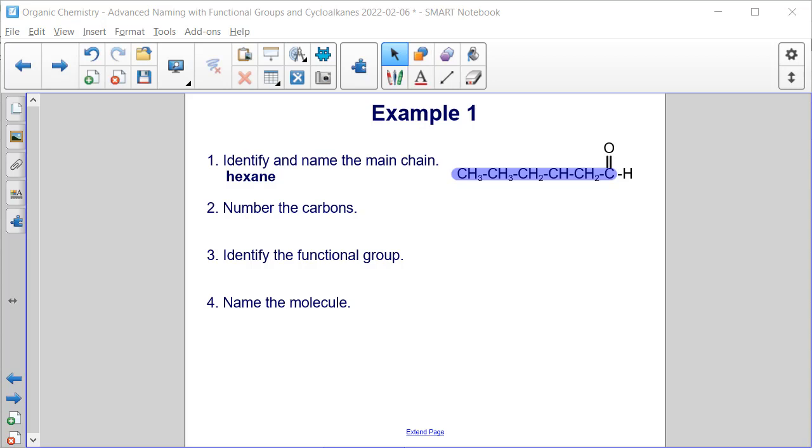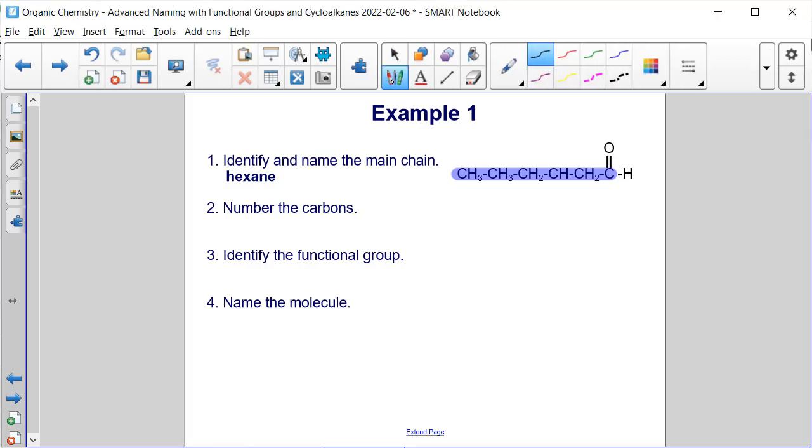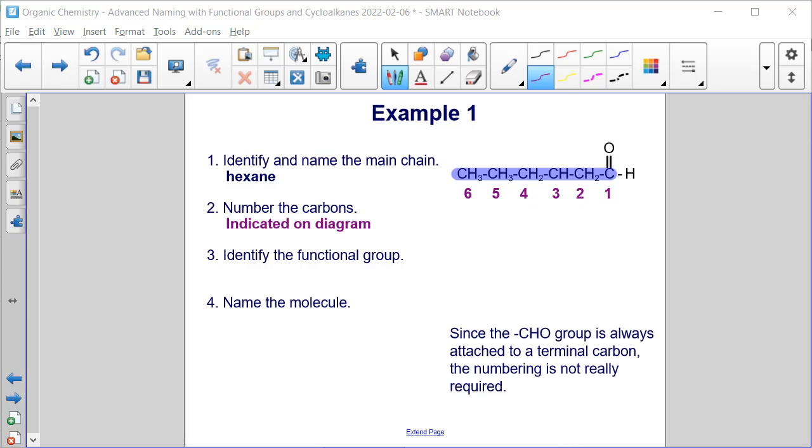All right, next we need to number the carbons. And so when we have this terminal double bond O, the numbering always begins at that carbon. So I will begin from the right towards the left. So you can see the numbering there, one through six from right to left. Okay, so you can see indicated on the diagram that I'm bringing up the carbons. And as we discussed, we always start at that terminal carbon. Not really necessary, because we're always going to start on that end. But it helps us, especially down the line, if we have any substituent groups.